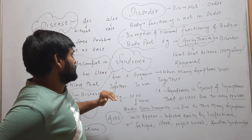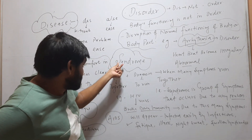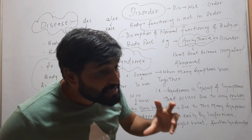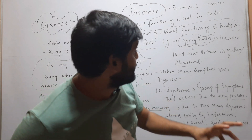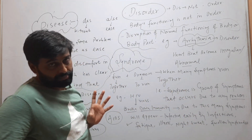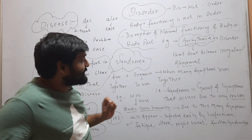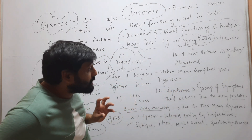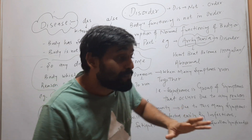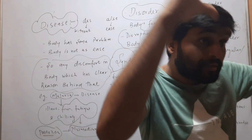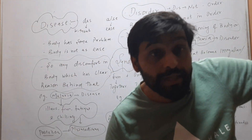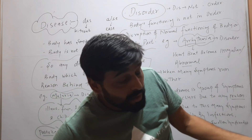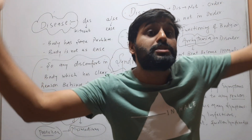Now coming to the last one, that is syndrome. It is a Greek word — 'sun' means together, 'drae' means run — so syndrome means when many symptoms run together. A syndrome is a group of symptoms that occur due to any reason, and that reason may be anything.